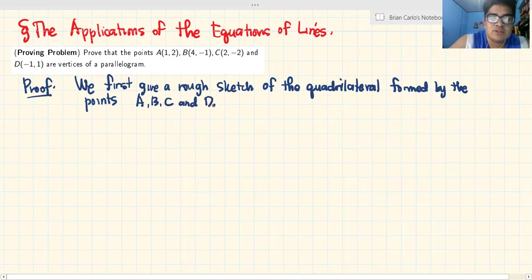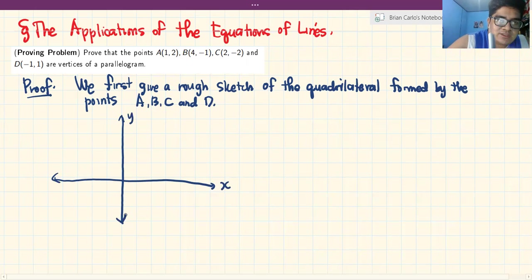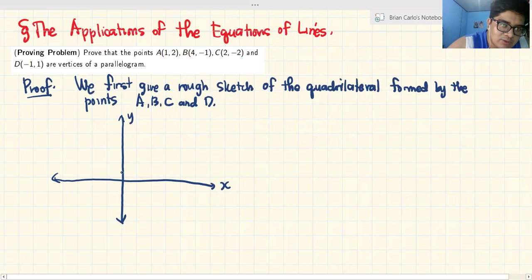Kailangan natin gawin yung sketch. Let's draw the Cartesian plane right over here. Ito yung X, ito yung Y axis. Una, ang kailangan, it is 1,2. This is point A (1,2).